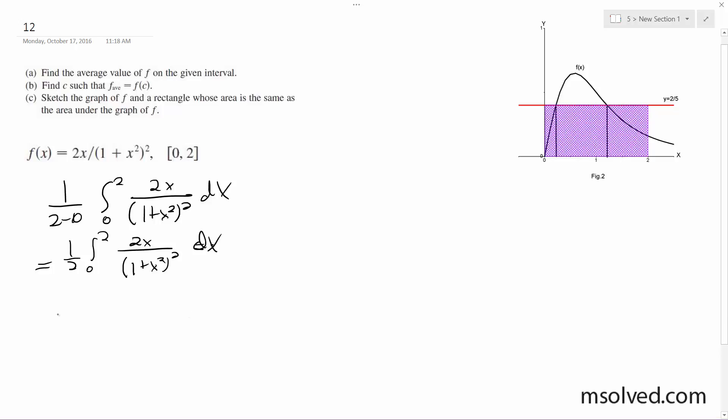We're going to let 1 plus x squared equal t, and then 2x dx is equal to dt.